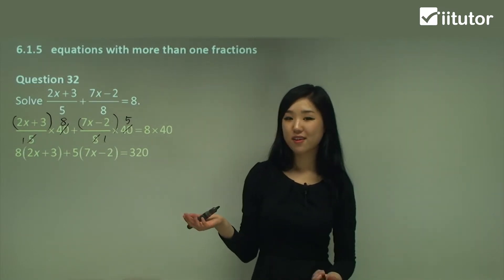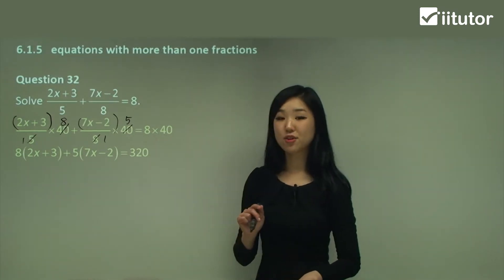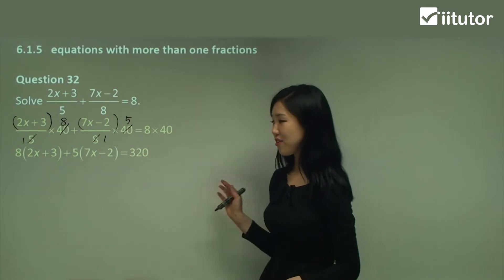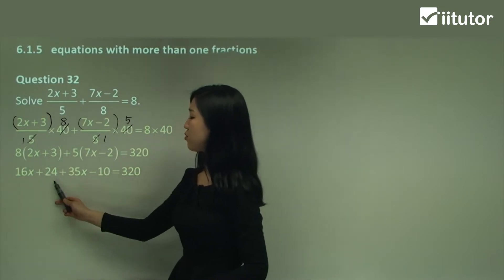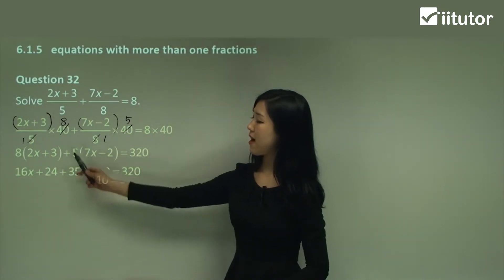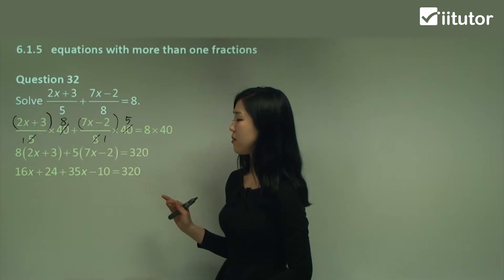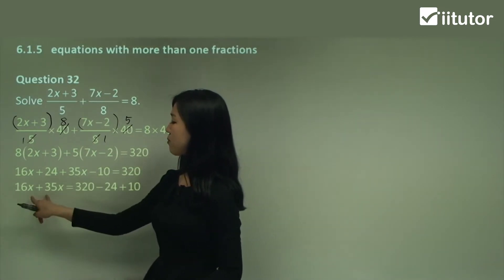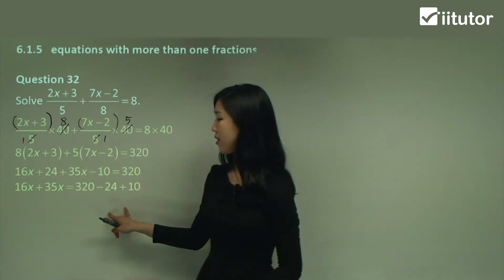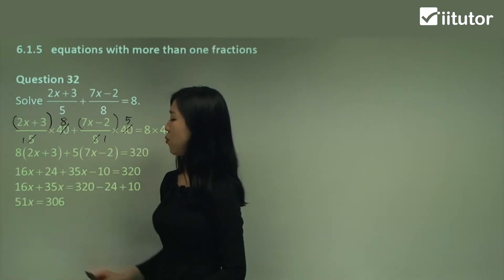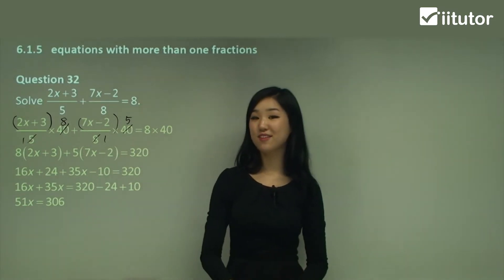We have grouping symbols, but we're glad we got rid of the fractions, which is the most annoying part. Now expand it out and get rid of those grouping symbols. So 8 times 2x is 16x, 8 times 3 is 24, 5 times 7x is 35x, 5 times negative 2 is negative 10, which equals 320. Now gather your like terms — keep the x's on the left and the constant numbers on the right. 16 plus 35 is 51, so we have 51x, and 320 minus 24 plus 10 is 306.